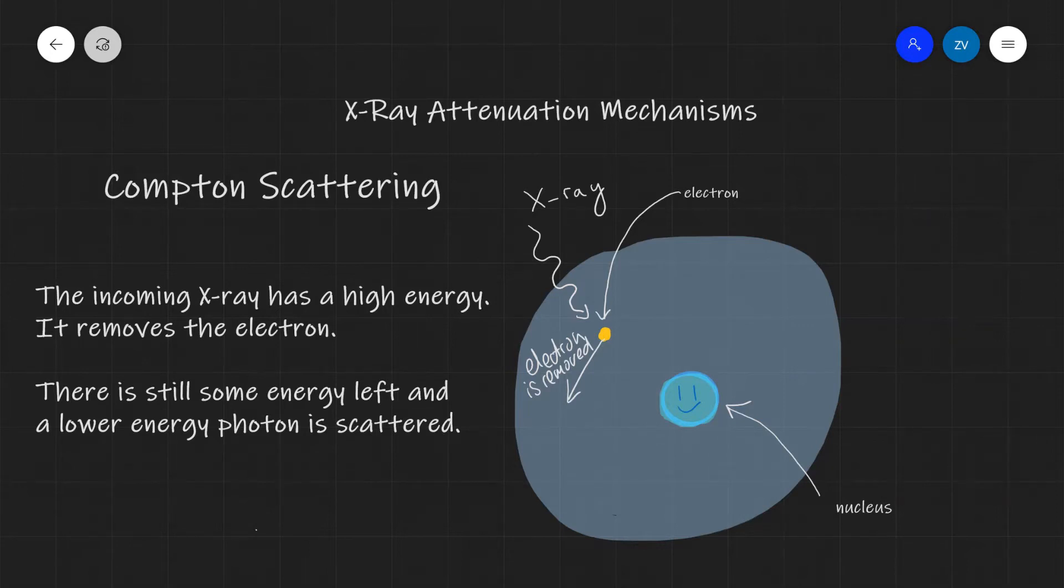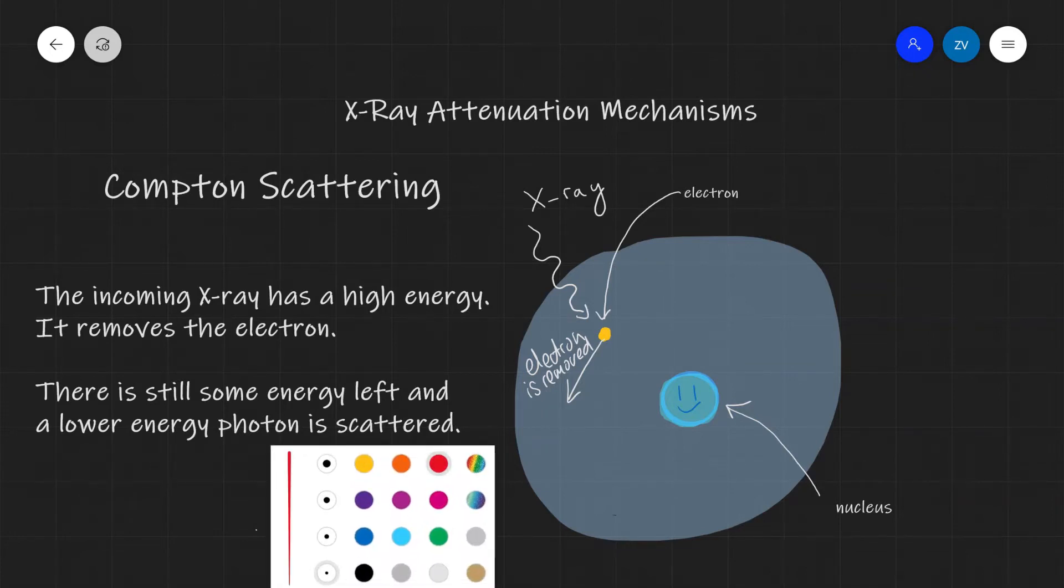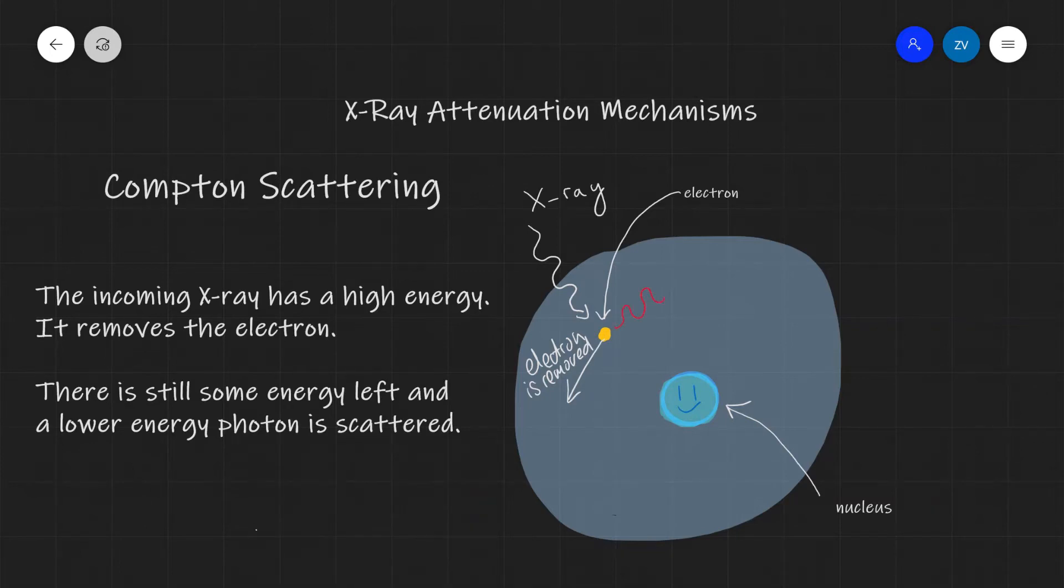However, there is still some excess energy within the X-ray. So it does not disappear completely and instead it is scattered with lower energy. And this is why I will actually draw it with red. So this is the scattered X-ray with lower energy. The reason why I've drawn it with red is because red in general has a lower energy or longer wavelength. That's where the term redshift comes from.